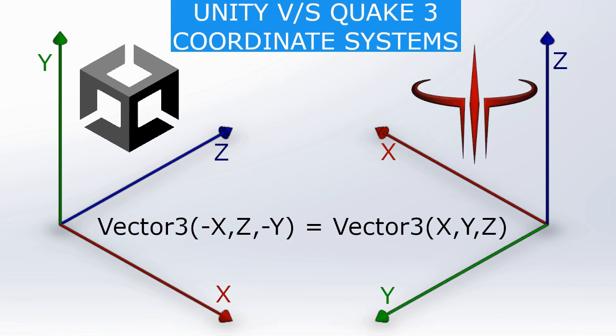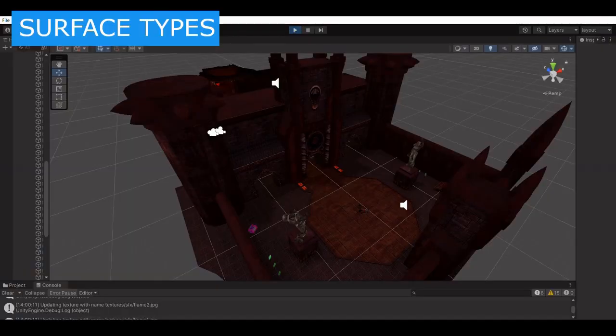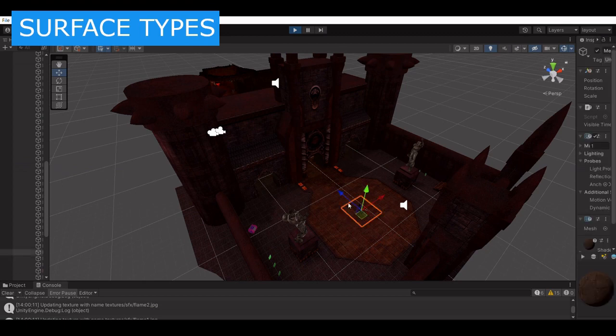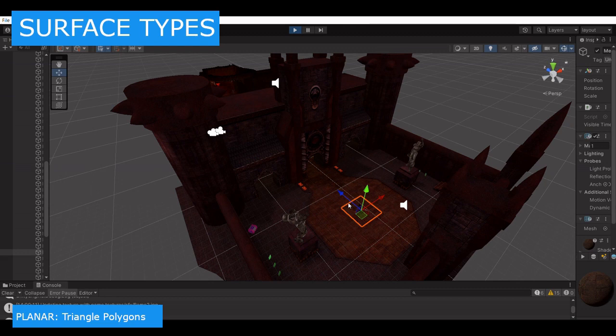Let's talk about the different surface types that Quake III has and how we match the rendering in Unity. The first type we're going to find is the planar surface. Basically, it's just triangles, planar polygons.